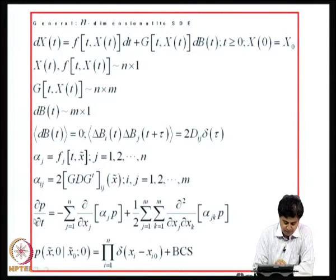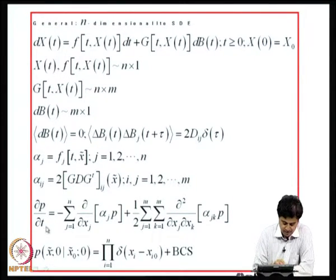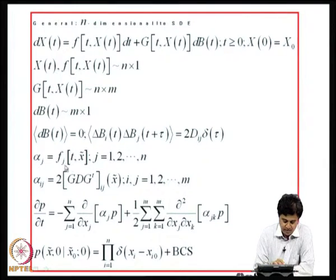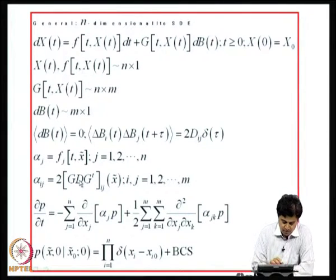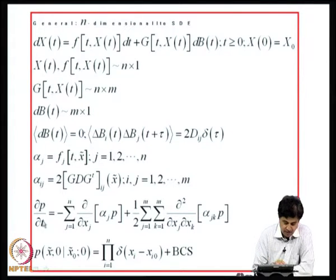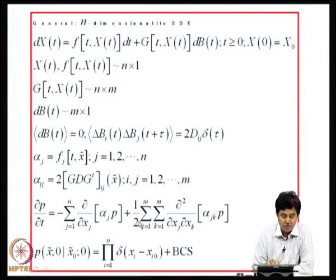The time evolution of the conditional probability density function of the system states, conditioned on the initial conditions, is given by a partial differential equation. The coefficients alpha_j and alpha_ij are the incremental moments related to the drift and diffusion. The Fokker-Planck equation can be derived for different dynamical systems and can be viewed as an equation of motion for the time evolution of the probability density function.